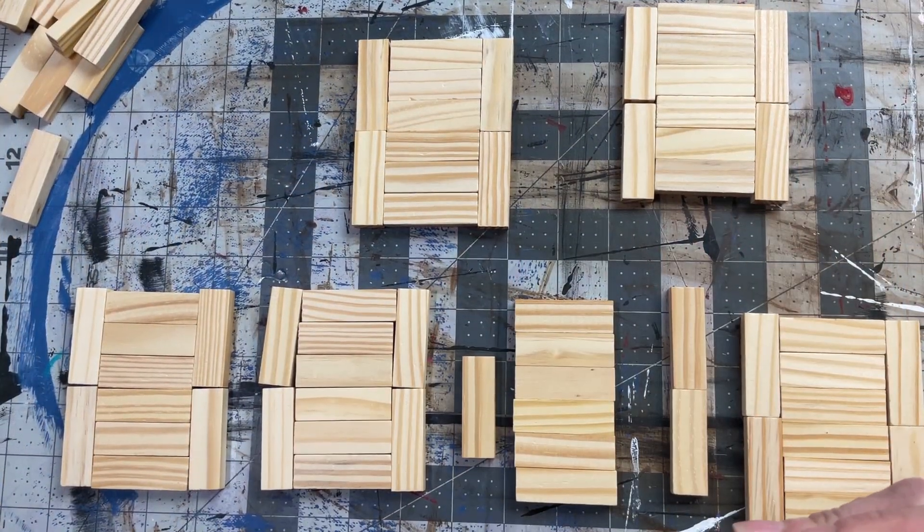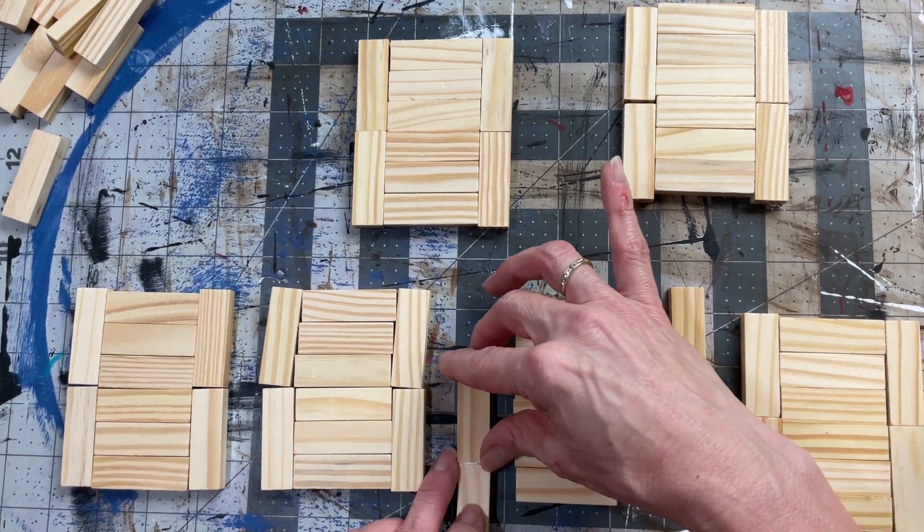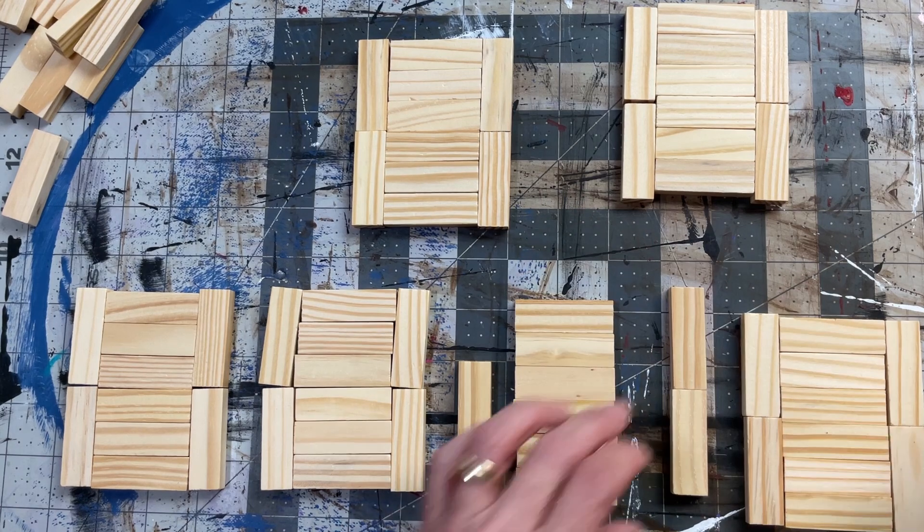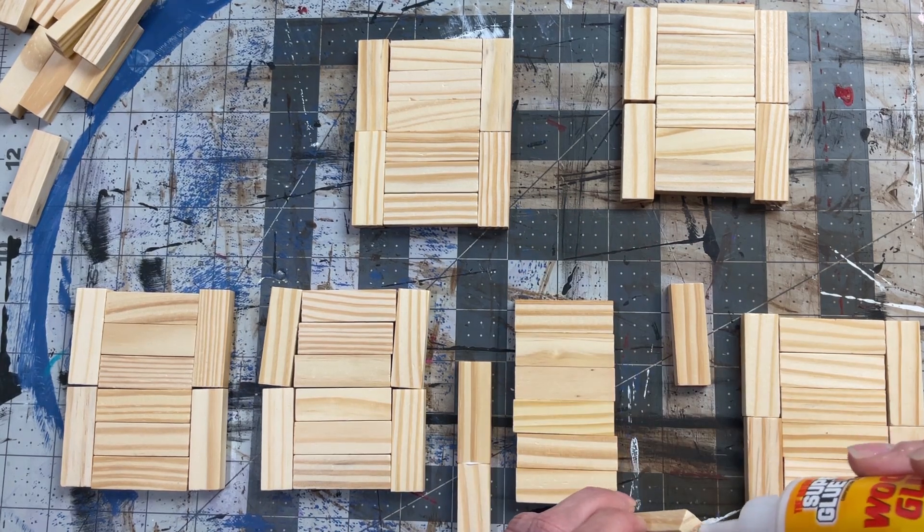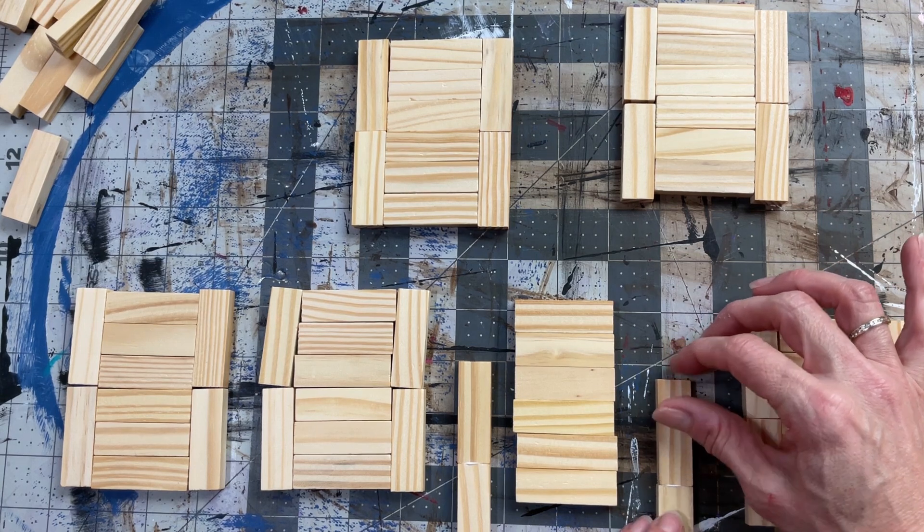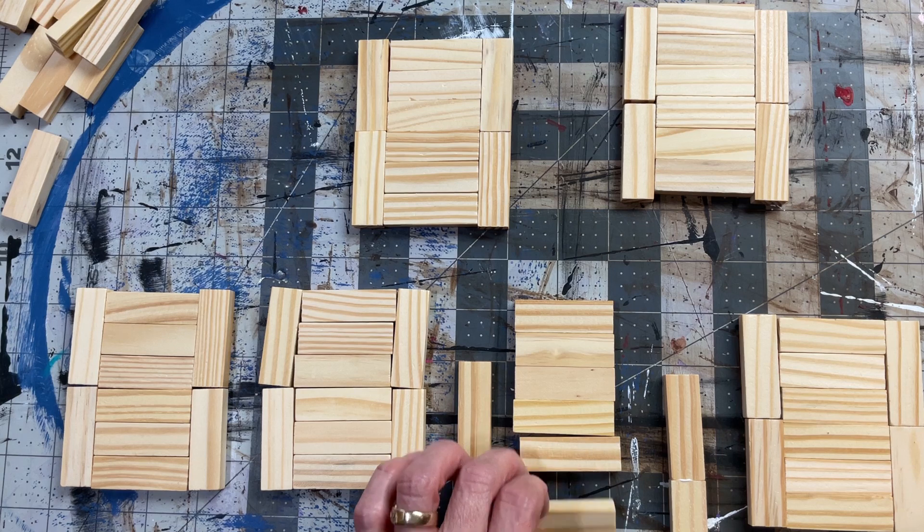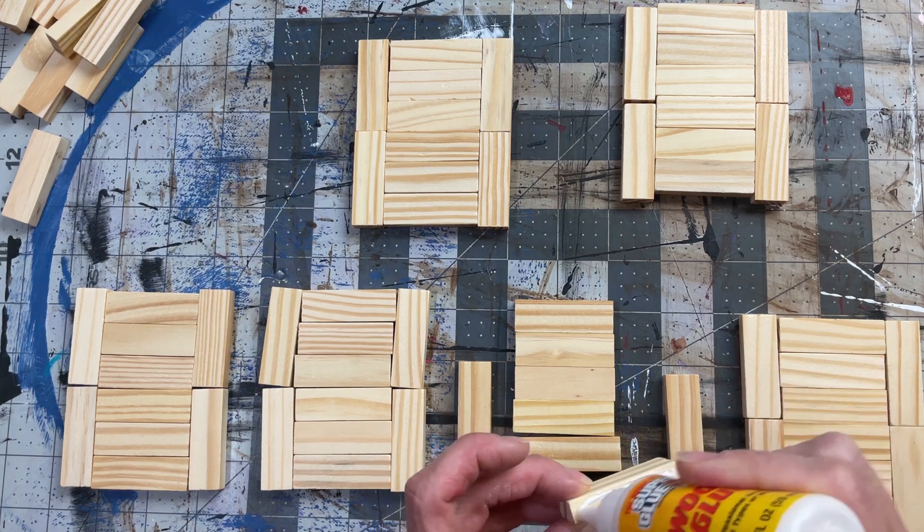It's going to be the base of your lantern and the top. I have enough laid out here for three lanterns. The first thing I'm going to glue together are these long pieces that are two blocks long. Again, just putting a little bit of wood glue, I'm going to glue all of these long pieces together.